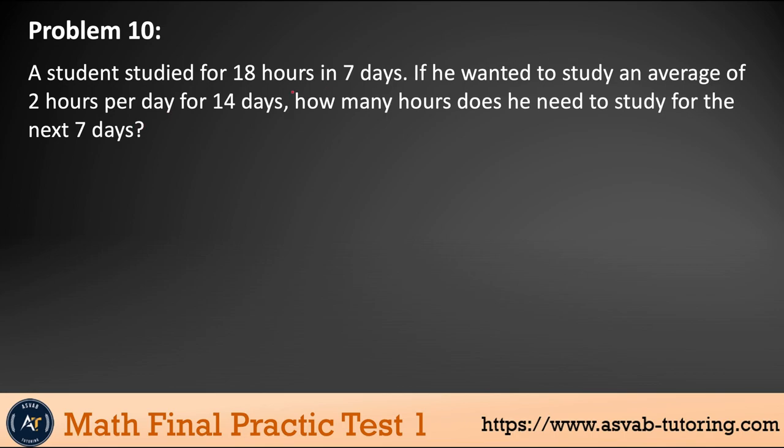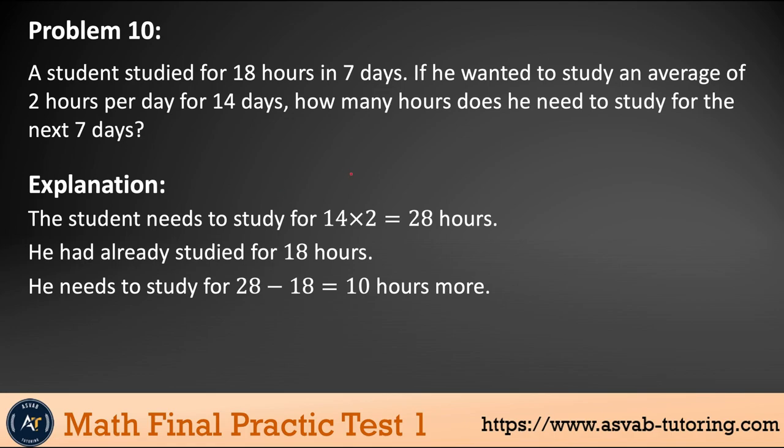Next problem. A student studied for 18 hours in 7 days. If he wanted to study an average of 2 hours per day for 14 hours, how many hours does he need to study for the next 7 days? So let's see how to do this problem. So he studied 2 hour per 14 days, right? So if you multiply 2 hour times 14, that gives you 28 hours, right? So that is, he needs to study 28 hours, but he already did 18 hours. So he covered 18 hours, so what is 18 hours here, right here, right? So if you subtract 18 hour from 28 hours, so that is 10 hour. He has to go more in order to make the average 2 hour per day for 14 days.